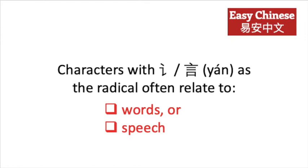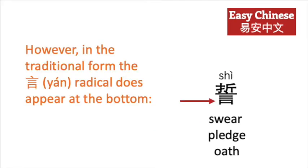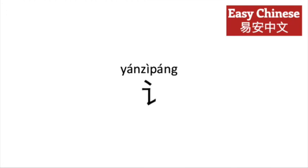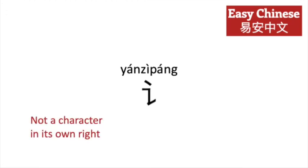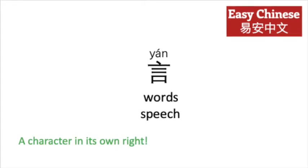Characters with yán as the radical often relate to words or speech. The yánzì páng radical is always located on the left. However, in the traditional form, the yán radical does appear at the bottom, as in shù, meaning swear, pledge, or oath. Yánzì páng is not a character in its own right. However, yán is a character in its own right and it means words or speech.